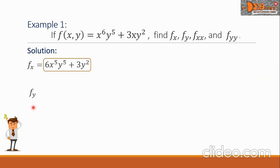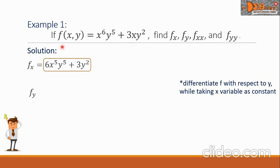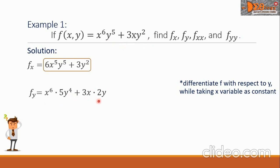Next is f sub y. We are going to differentiate the function f with respect to y, taking x as constant. So the derivative is x raised to 6 — treated as a constant — multiplied by the derivative of y raised to 5, which is 5y raised to 4, plus the derivative of 3xy squared, which gives 3x times 2y. Simplifying, we have 5x raised to 6 times y raised to 4, plus 6xy. This is the final answer.